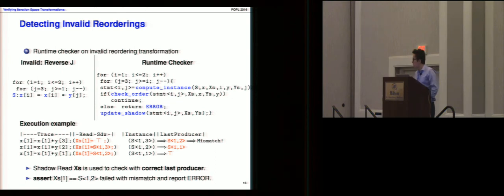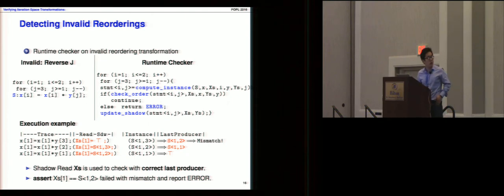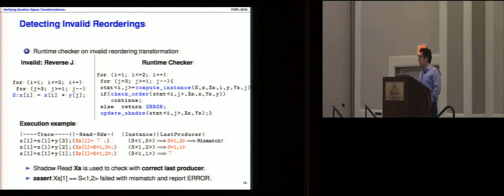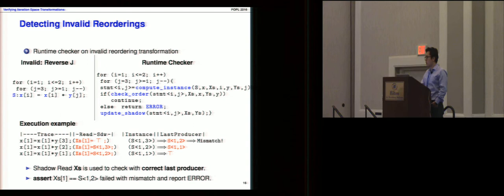As a concrete example, a Jacobi code of 10 lines can be transformed by a polyhedral compiler into thousands of lines of code, making it very difficult to check by hand. The presenter notes that the transformer will always extend the code to many more lines. After this exchange, the session concludes and the audience is thanked.